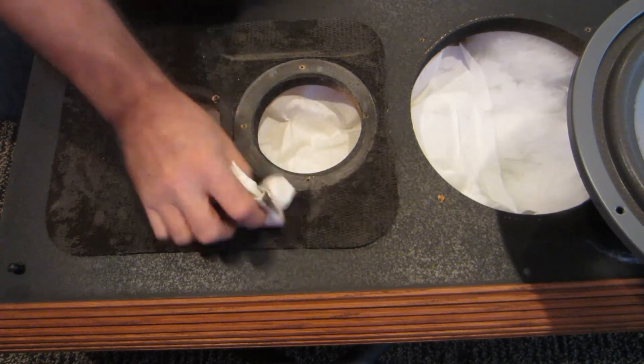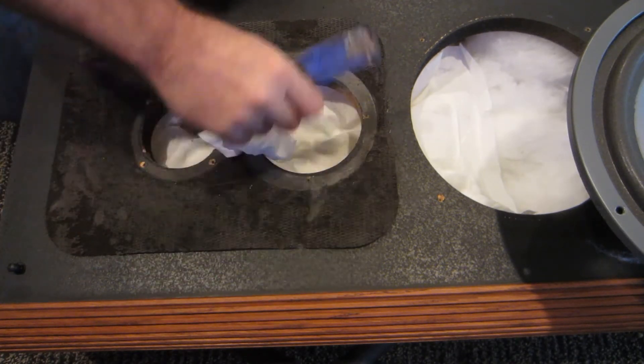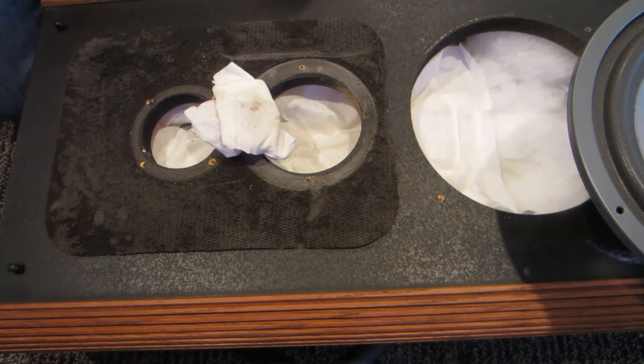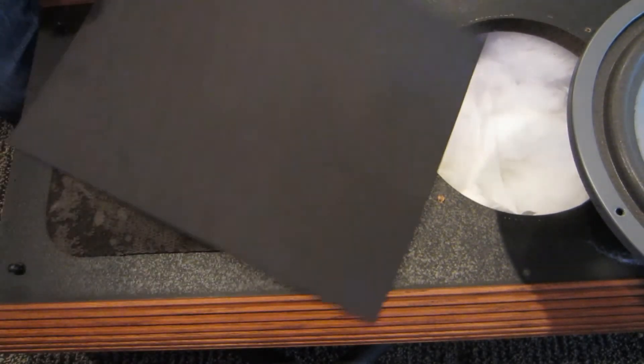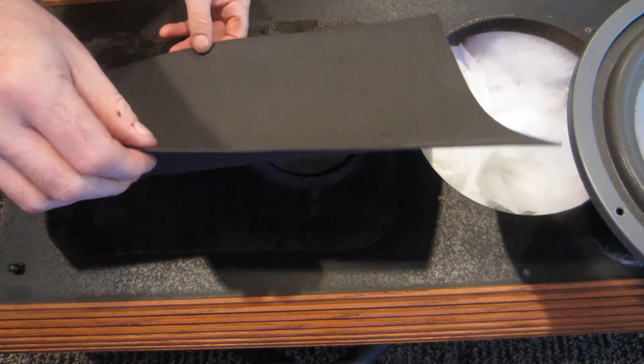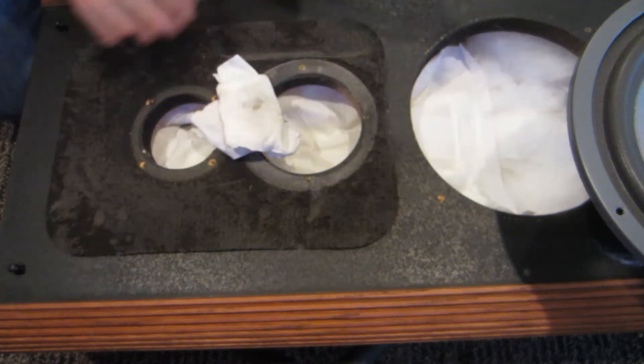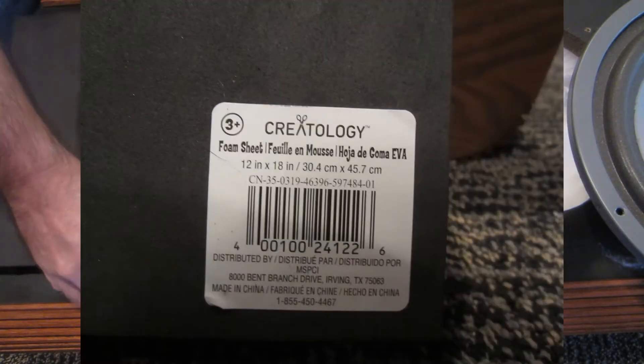You've got to get it as flat as possible because when we replace it with this mat, that mat is only that thick. And if there's any bumps and bubbles in there, you will actually see it through there.